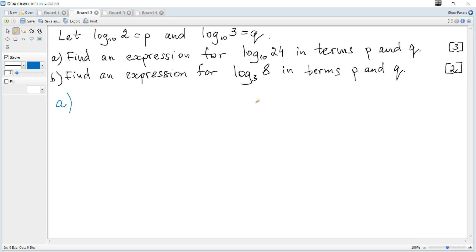24 can be represented as a product of 3 and 8. And we know that log of a product is equal to the sum of two logs to the same basis. This formula is given in a data booklet.